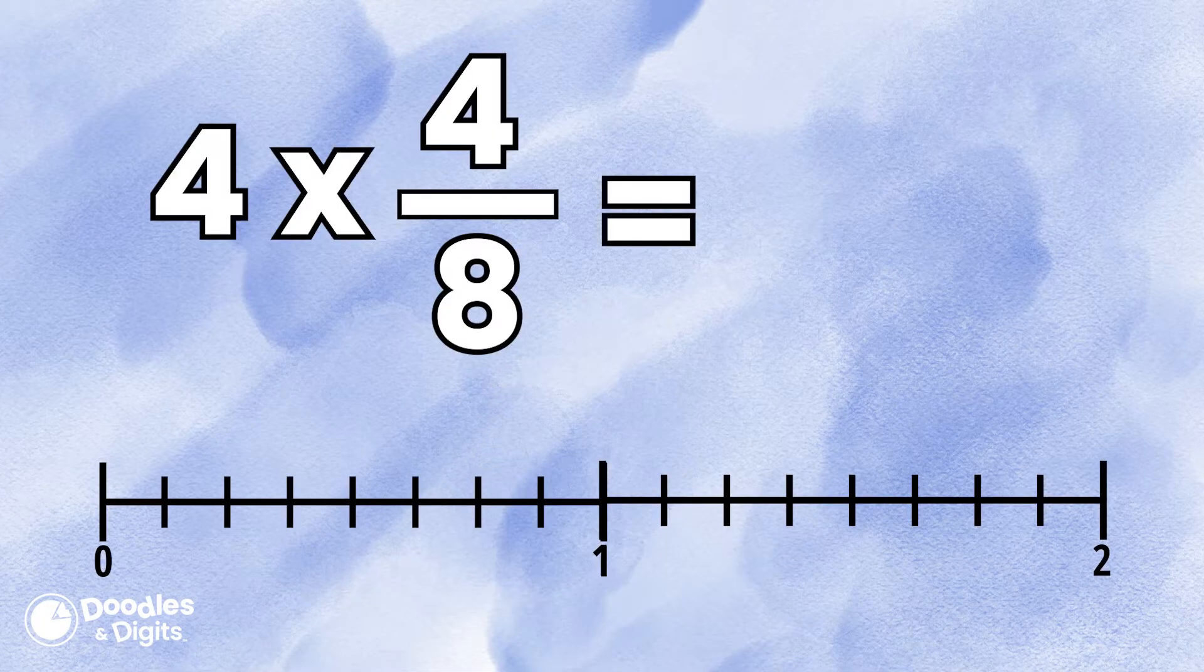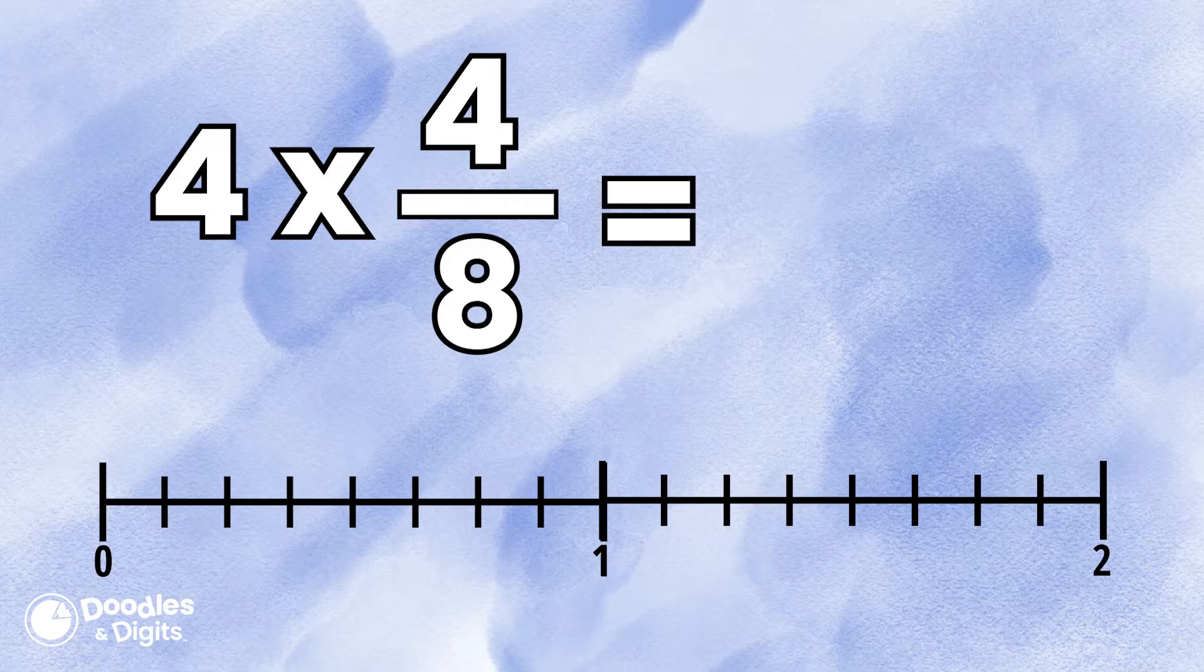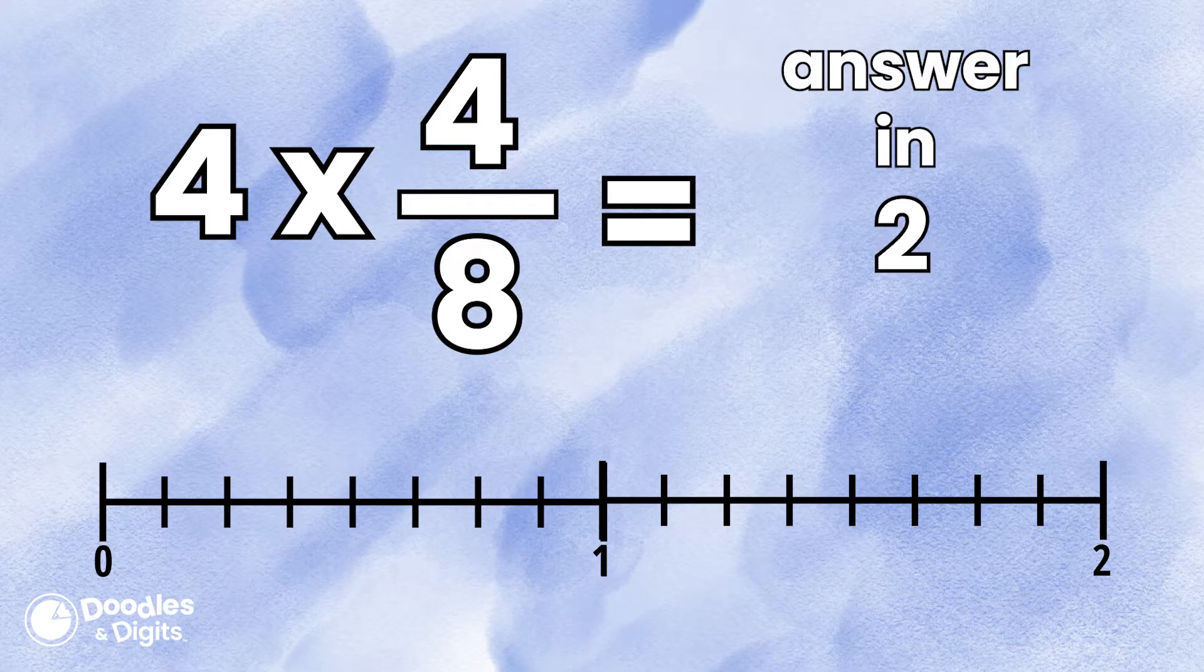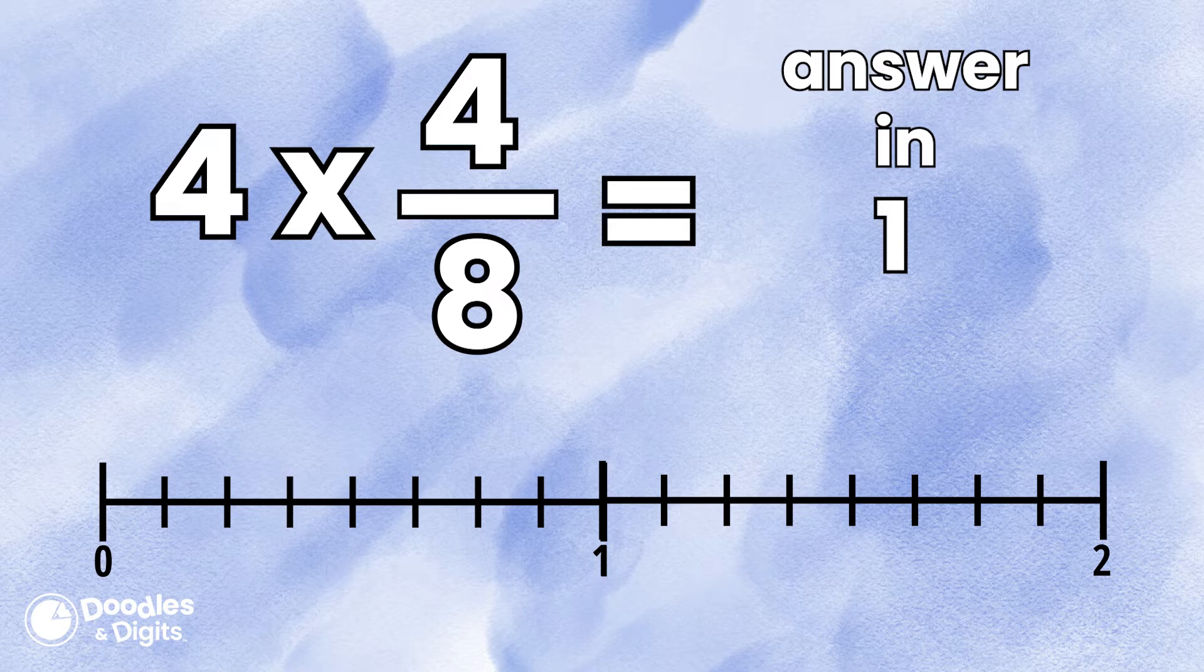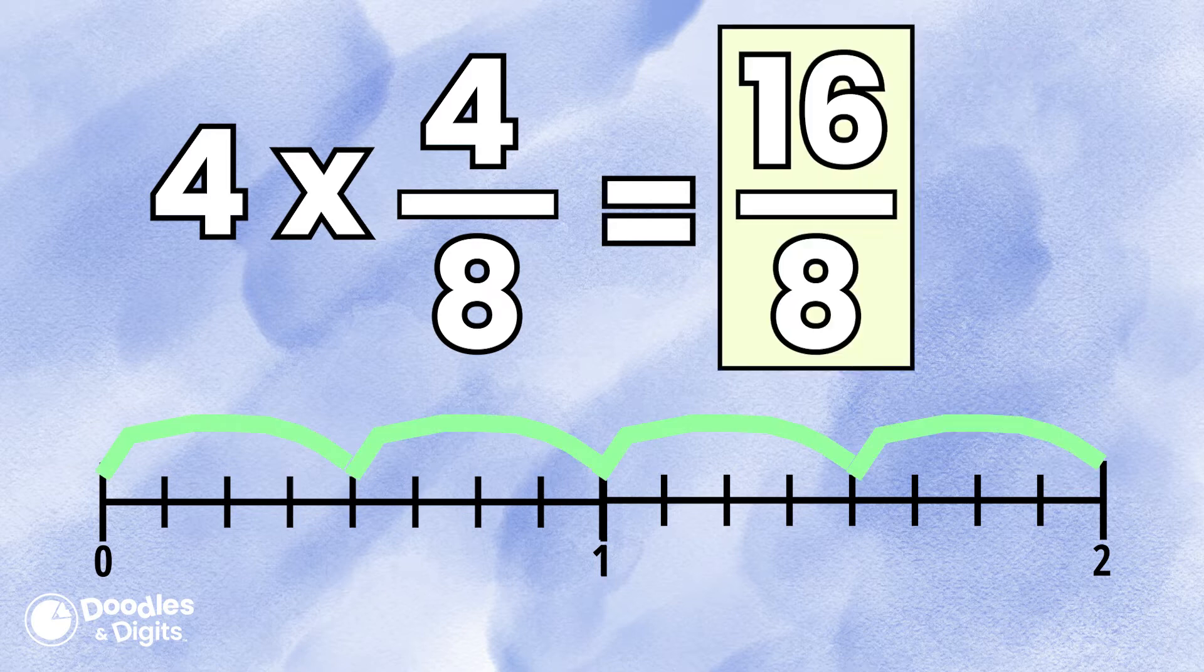All right, now that we've done a couple of these, let's see if you can do a few on your own. Four times 4/8. Four times 4/8 is 16/8 or two wholes.